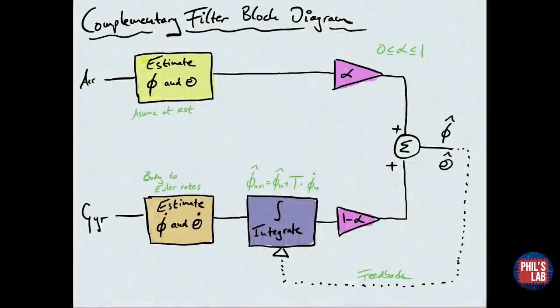Now here's a complementary filter block diagram. We have two branches: one at the top which is to do with the accelerometer, and one at the bottom which is to do with the gyroscope. And at the end, we do our merging step.